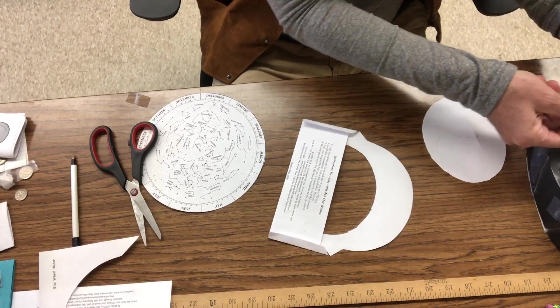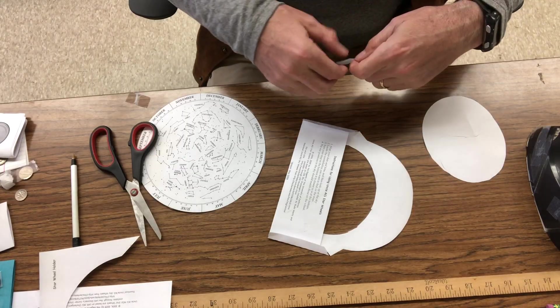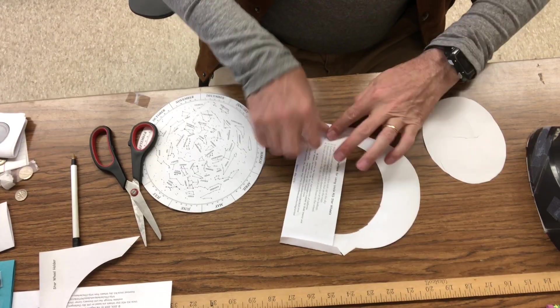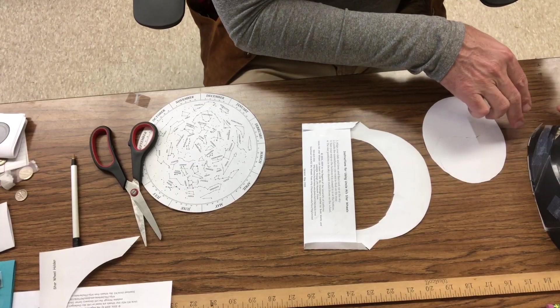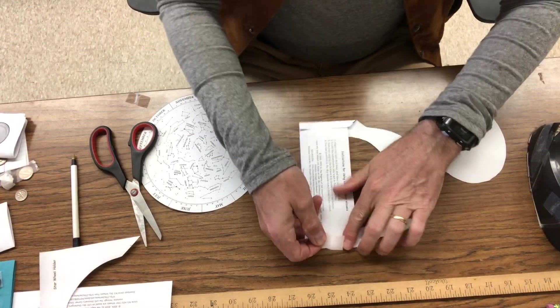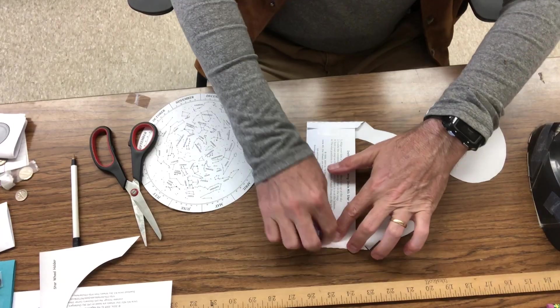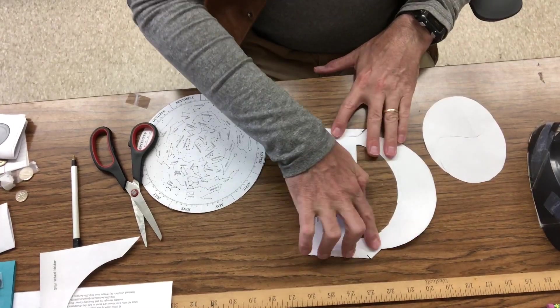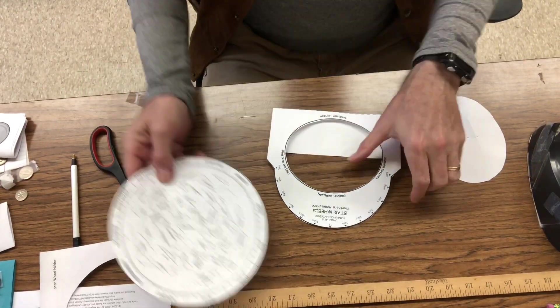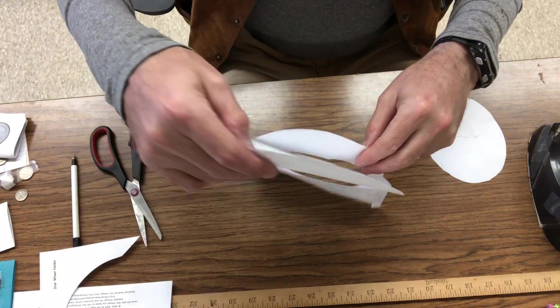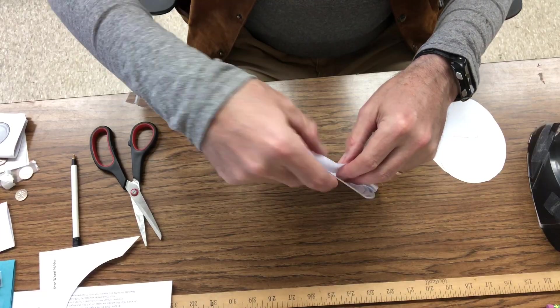All right. And if you have tape handy, go ahead and give it a little bit of piece of tape. But make sure you're taping down here on the sides down here and not up higher. All right. And then another little piece of tape there. Guess what? Your star wheel is almost complete. The last thing you have to do is take the star wheel and slide it in the pocket.